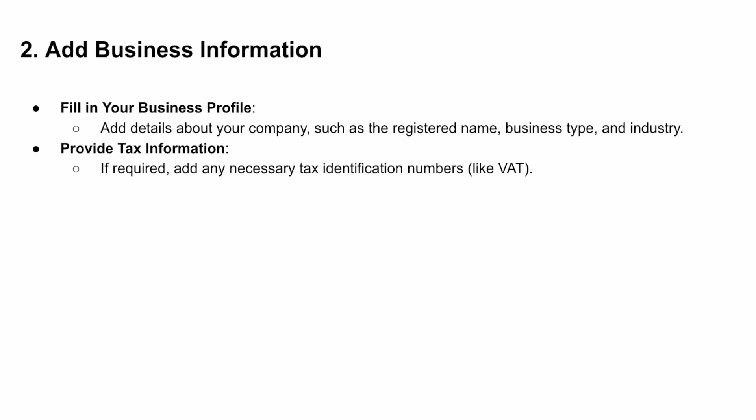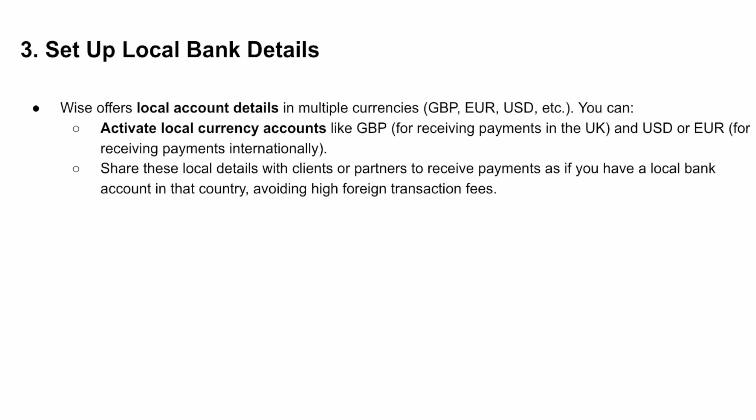Next you'll add a bit more business information such as your business profile and some tax information if required. You can also set up local bank details. WISE offers local account details in multiple currencies. You can activate local currency accounts like GBP for receiving payments in the UK, and USD or euro accounts for receiving payments internationally. Share these local details with clients or partners to receive payments as if you have a local bank account in that country — avoiding high foreign transaction fees.